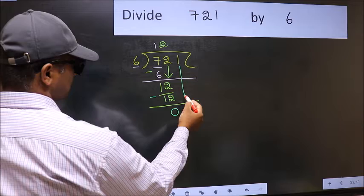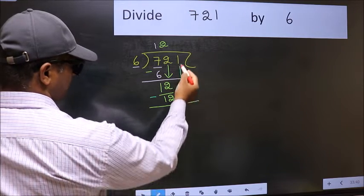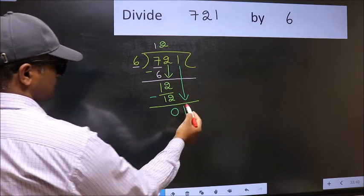After this, bring down the beside number. So, 1 down. After this step, the mistake happens.